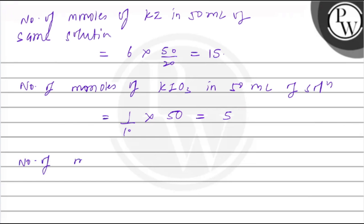Now we will calculate number of millimoles of KI used with 50 ml of KIO3 solution. So this will be 2 multiplied by 5 gives us 10.